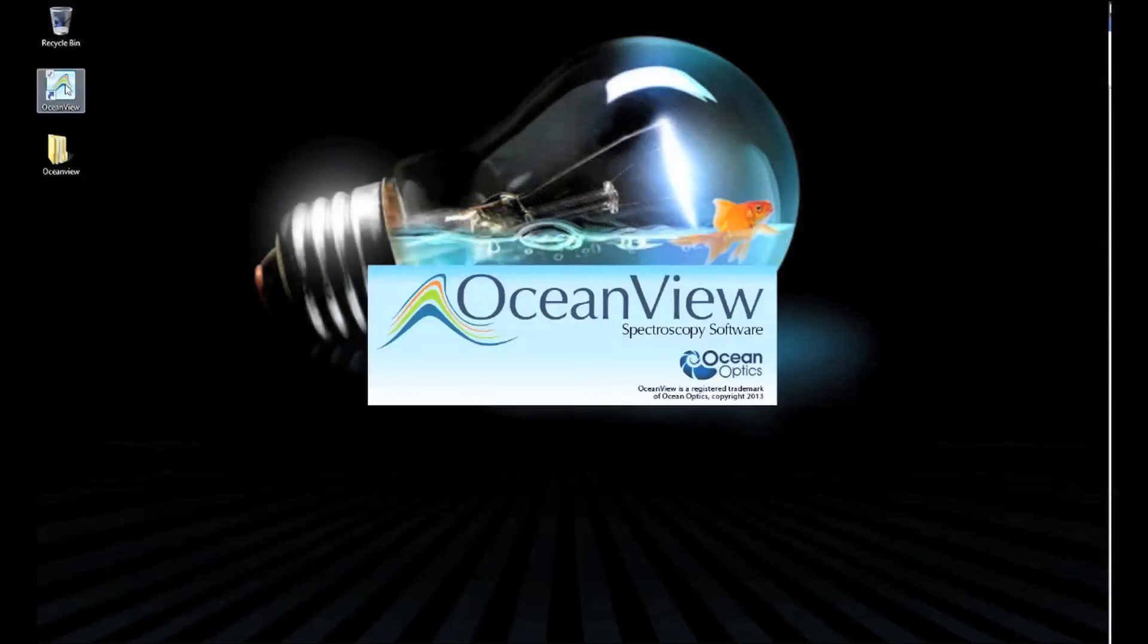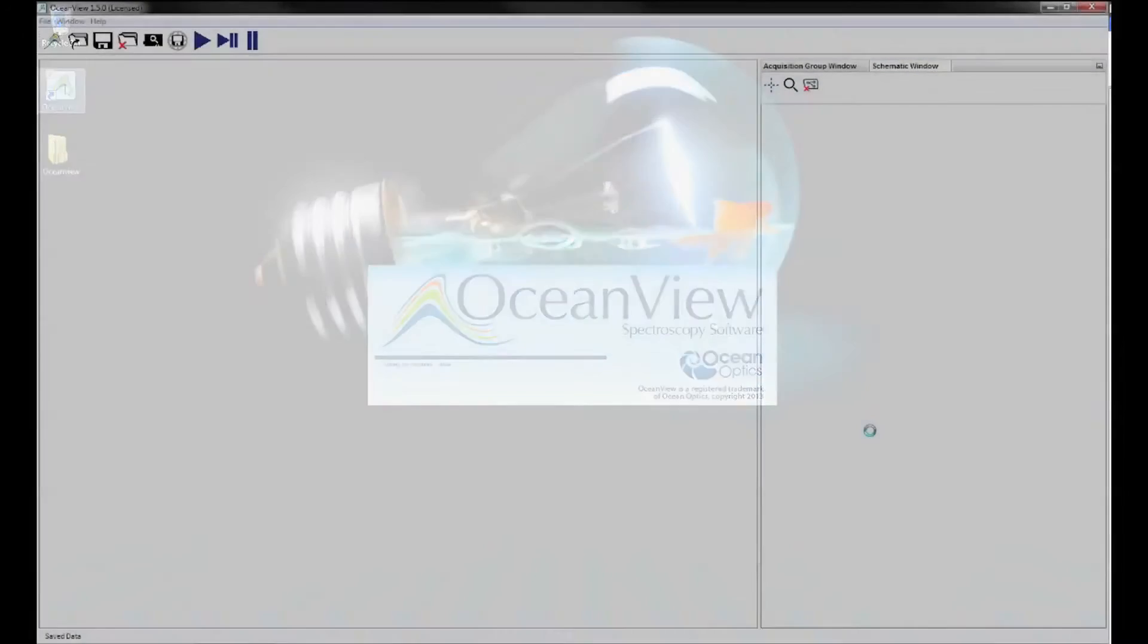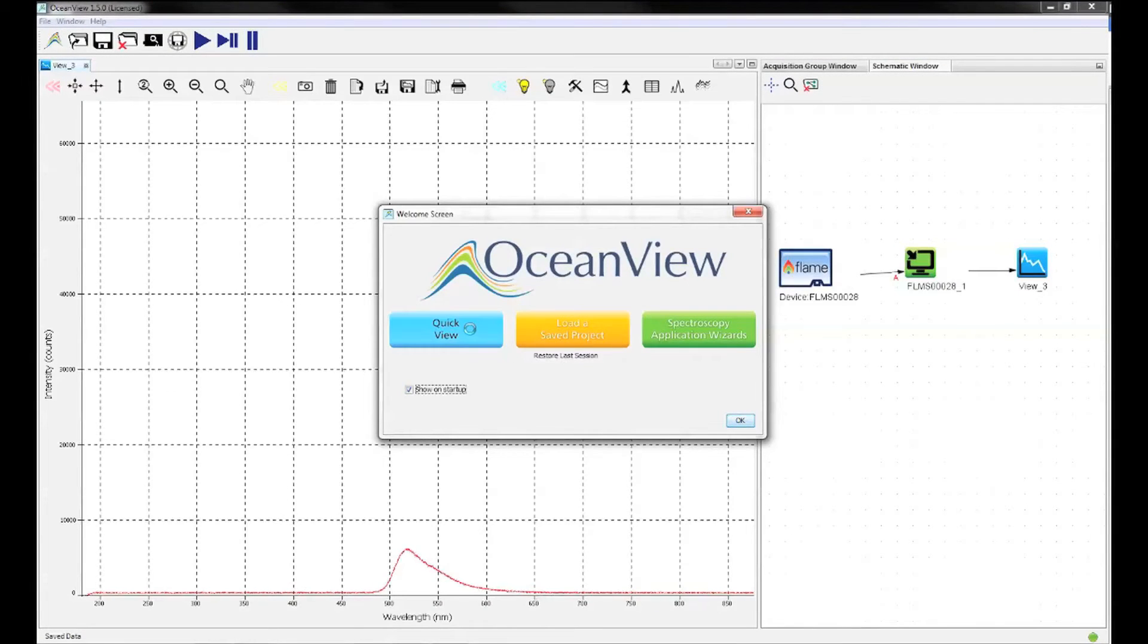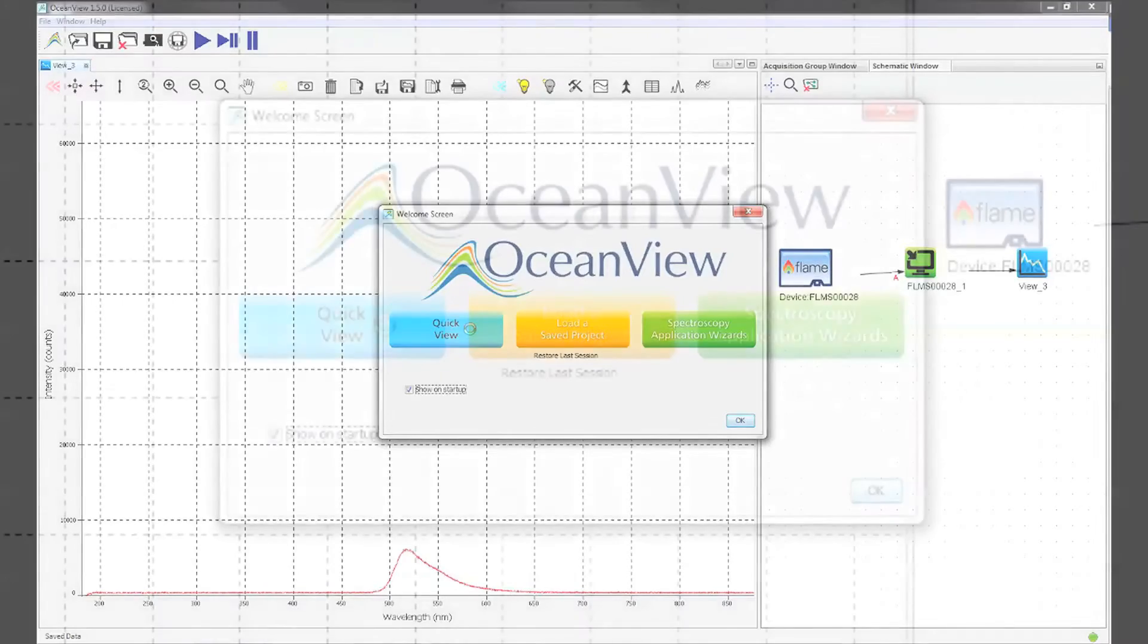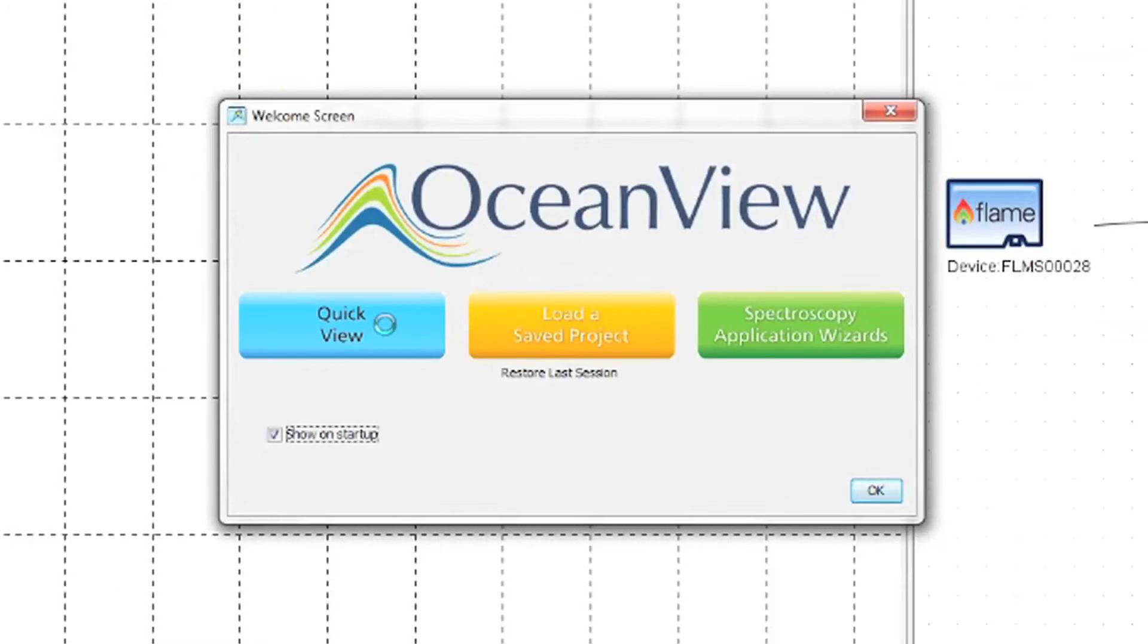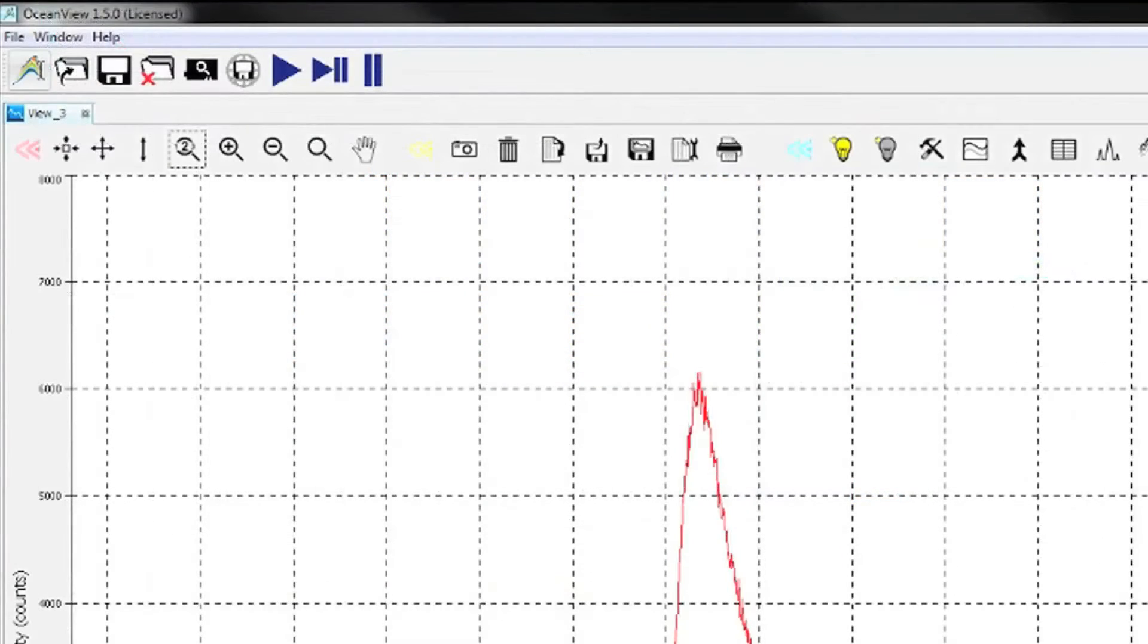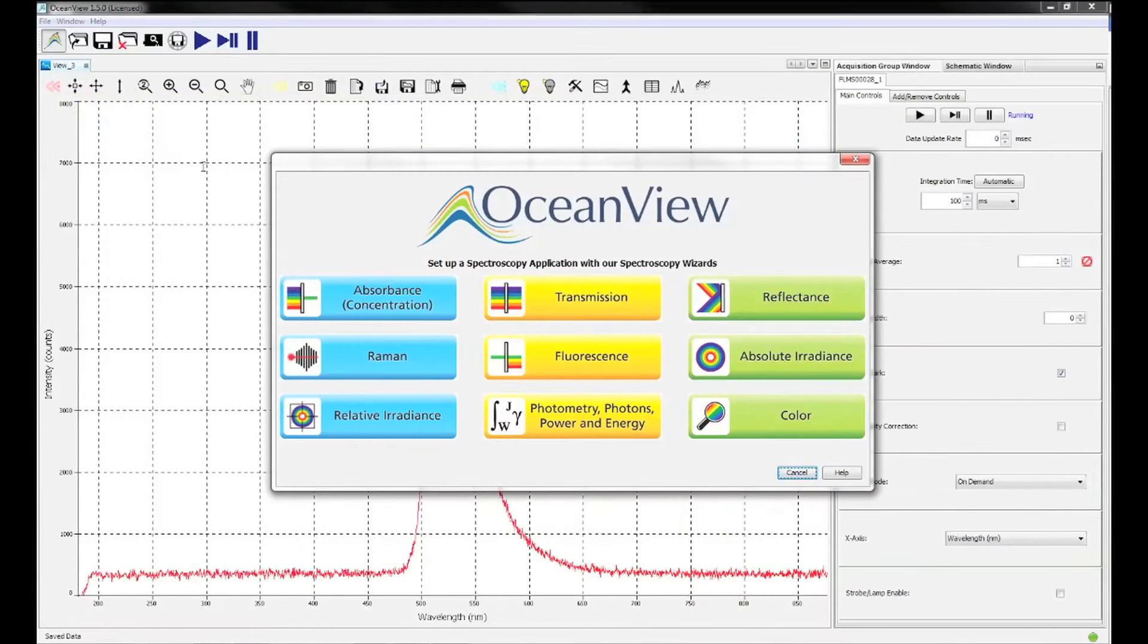Now that you have set up your experiment, open up the Ocean View software. You will see the raw spectrum of light being received by your spectrometer. Select the spectroscopy application wizard from the pop-up window, or create new spectroscopy application which can be found in the top left corner. Then choose fluorescence from the menu.